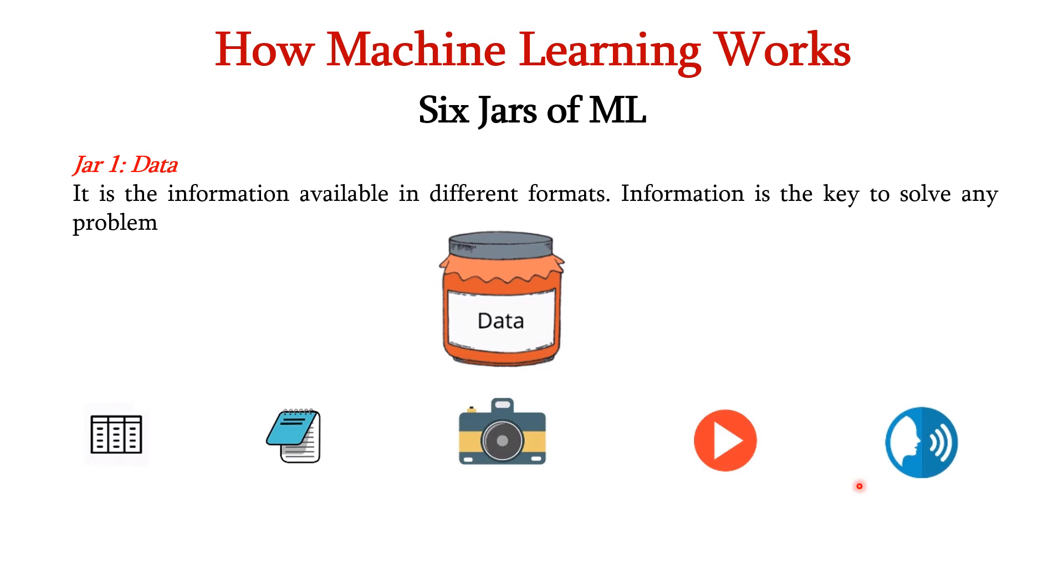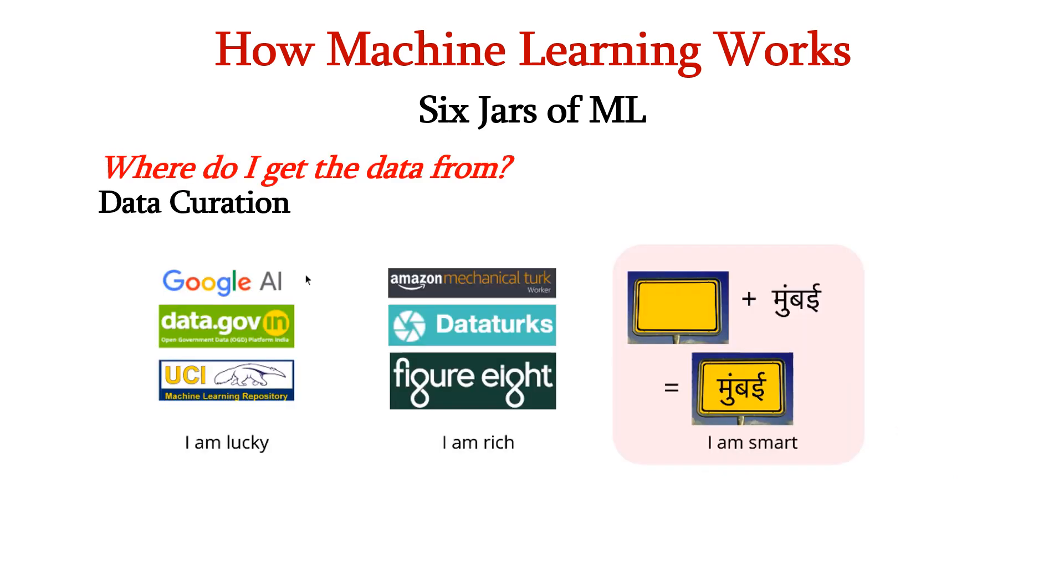Jar 1 is data. It is the information available in different formats like table, text, image, video, audio, etc. Information is the key to solve any problem. Where do we get this data from? If we are lucky, we can get it for free. If we are rich, we have to buy it. If we are smart, we can create our own dataset.